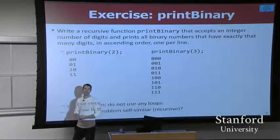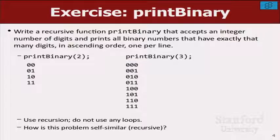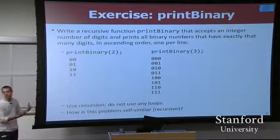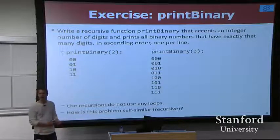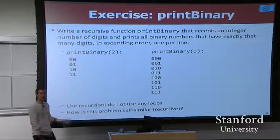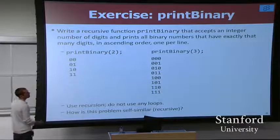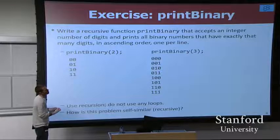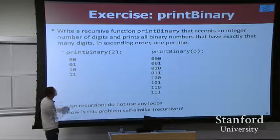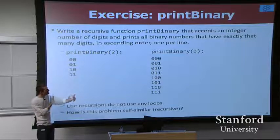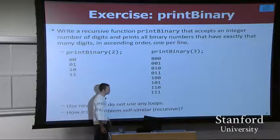Here's an example problem in this domain of exhaustive searching. I want to write a recursive function called print binary that prints all binary numbers of exactly a given length - two bits, three bits, etc. You might say, isn't that just a for loop? But if you think about it, it's not as easy as you'd think with a for loop, because you end up wanting loops related to each digit. And if you don't know how many digits you're going to have, you don't know how many loops you need.